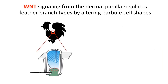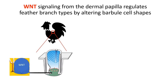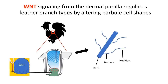Functional studies in chicken show that Wnt signaling modulates feather branch type formation. Increased Wnt signaling in the anterior of the dermal papillae causes a pennaceous-specific hooklet-like structure to form in an otherwise plumulaceous feather follicle.